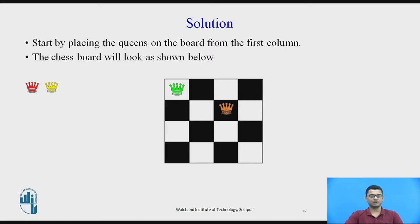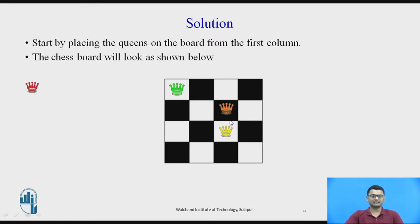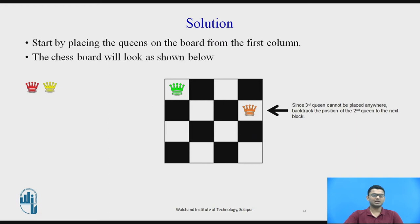We want to continue solving the problem and search for the position of the third queen. The third queen cannot be placed in the first column. It cannot be placed in the second column either because it would be attacked by the second queen diagonally. It cannot be placed in the third column because both queens would be in the same column, and this position is also unsafe since they are in the same diagonal. So we will be requiring to use backtracking.